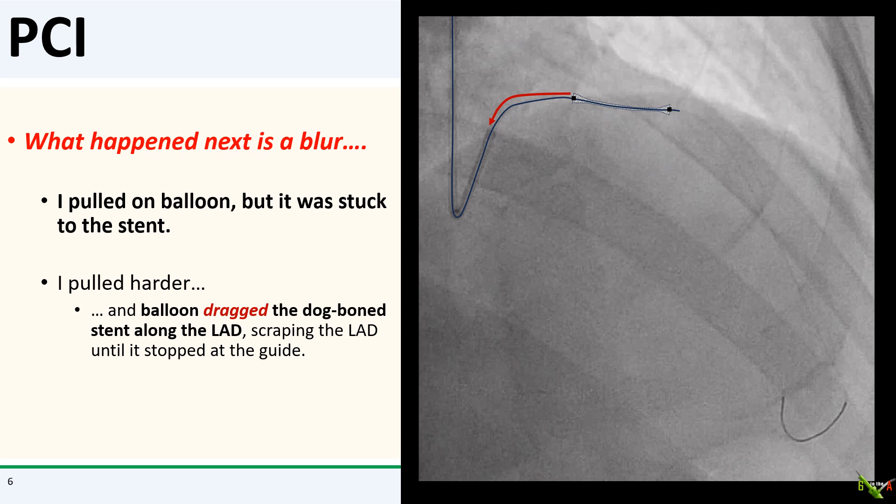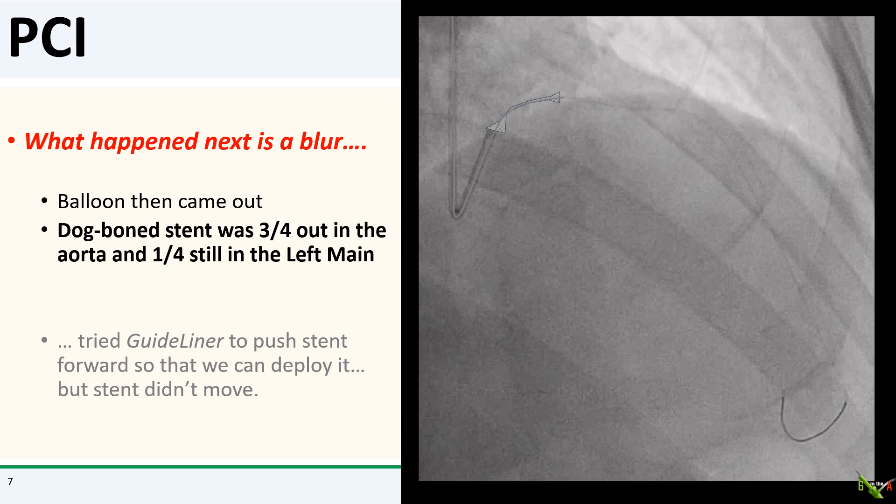But when I pulled on the balloon, it was stuck to the stent and wouldn't move. I pulled harder, and the balloon did move, but it dragged the dog-bone stent along with it. The expanded ends of the stent were essentially scraping the inside of the LAD as I pulled. The dog-bone stent finally stopped when it hit the guide, and I was able to pull the balloon out. The stent was now three-quarters of the way out into the aorta, with just a little bit left in the left main. I tried to use a guide liner to push the stent forward deeper into the left main to deploy it, but the stent would not move, and the guide liner just seemed to compress the stent more.